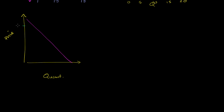So let's say that the price is up here — let's call that P1 — and then the quantity demanded, let's call that Q1. We already know that the total revenue is the area of this rectangle right over here. It's just the price times the quantity. If I'm selling two burgers an hour for $9 a burger, I'm going to make $18 per hour — that's going to be this area right over here.